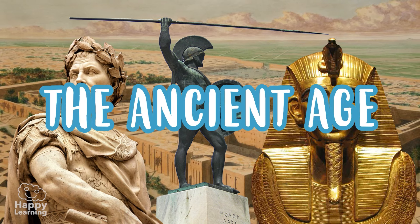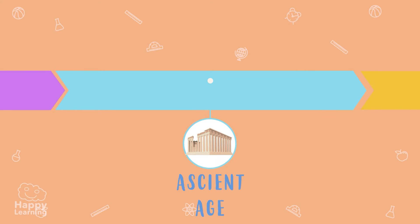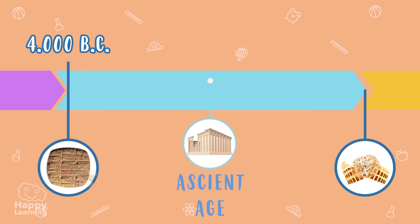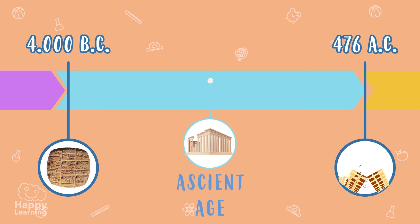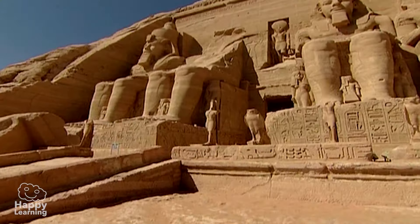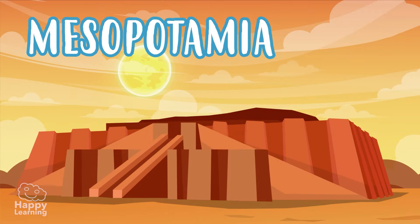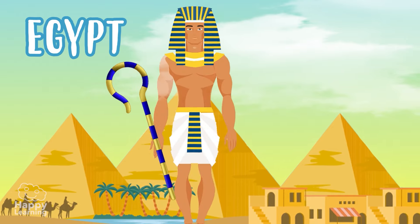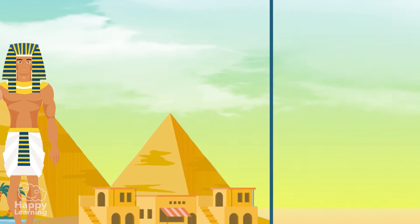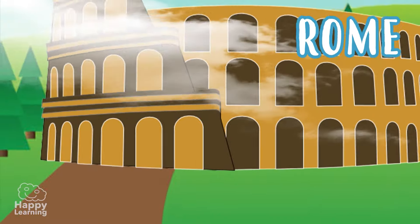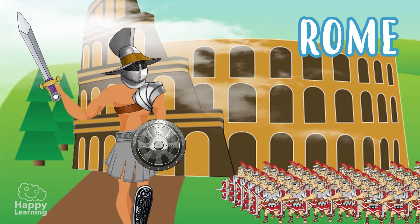The Ancient Age begins in 3000 before Christ when writing was created and ends with the fall of the Western Roman Empire in 476 after Christ. During this period the first civilizations emerged and developed: Mesopotamia being the first city-state, Egypt with its pharaohs and pyramids, Greece with its wise philosophers and the Olympics, and Rome with its strong gladiators and great empire.